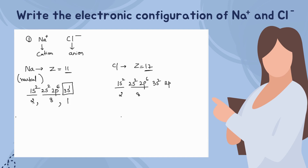After 3s², we come to 3p. If we filled all six into 3p we would get 18 electrons, but we only have 17, so we fill 3p with 5 electrons — giving 3p⁵. Altogether that is 2 + 8 + 7 = 17 electrons, so chlorine's configuration is 2, 8, 7.